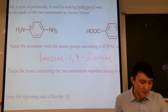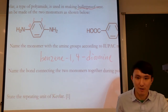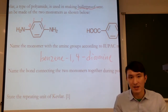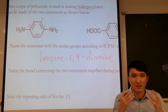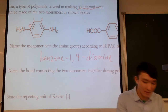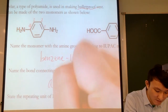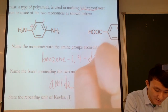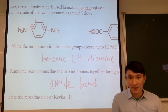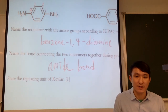Name the bond connecting the two monomers during polymerization: since it is a polyamide, the bond connecting the monomers must be the amide bond. State the repeating unit of Kevlar, showing the structure of the two monomers, with the brackets and 'n' indicating repetition. Do not put N inside the brackets — that would make it the polymer rather than the repeating unit.